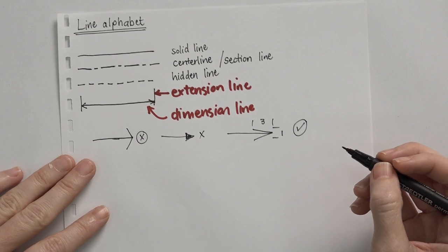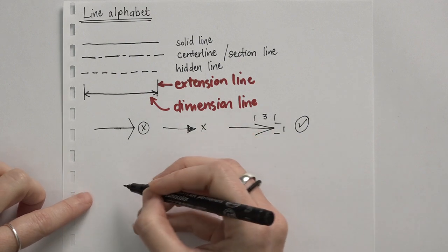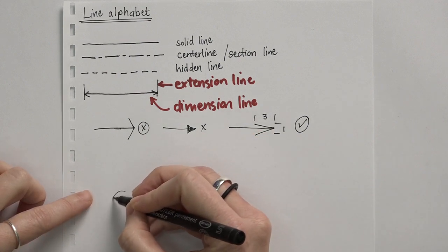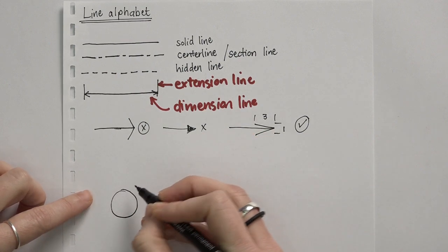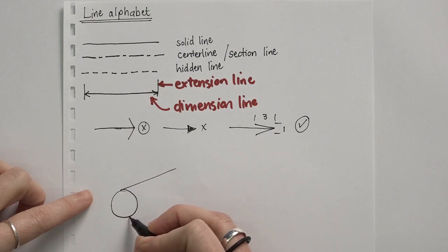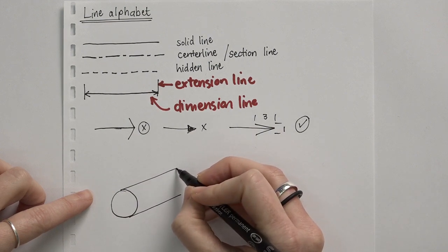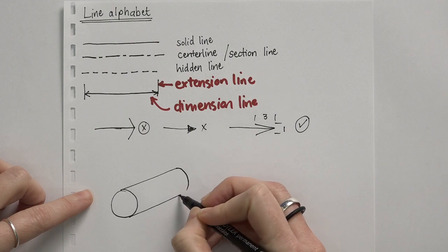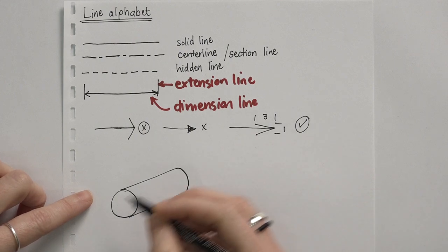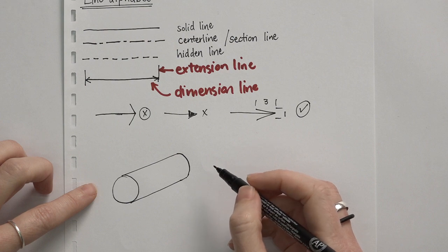Now when do we use these different lines? For example, if we just draw a normal cylindrical component, we are just using normal solid lines. There's no difference in the thickening or darkness of the line — it's just a normal solid line that we use for this.